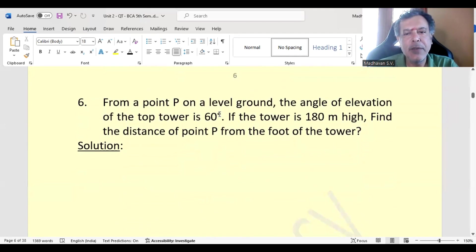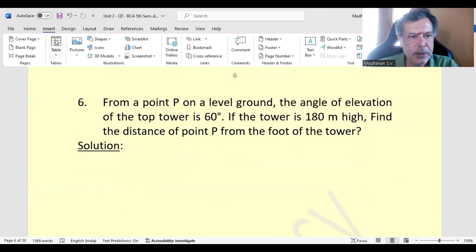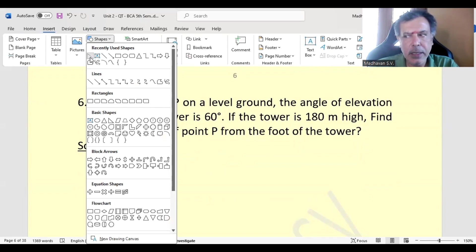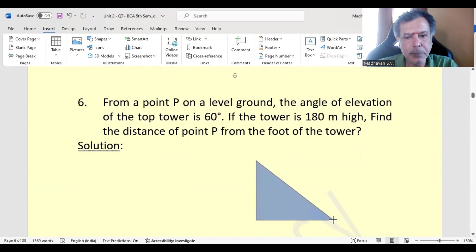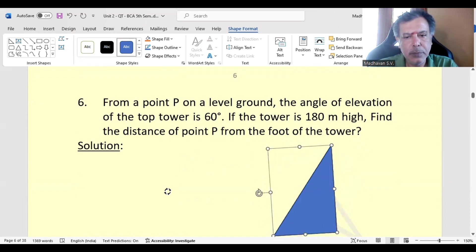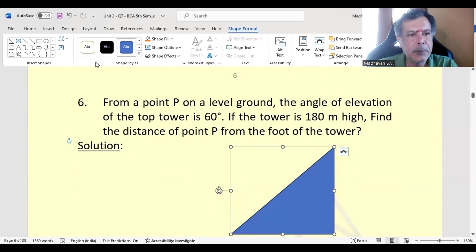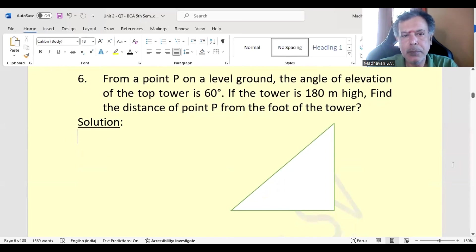Let us move on to the next. From a point on a level ground, the angle of elevation of the top of the tower is 60 degrees. If the tower is 180 meter high, find the distance of the point from the foot of the tower. Again, let us consider a right angle triangle. We will consider QR as the tower.